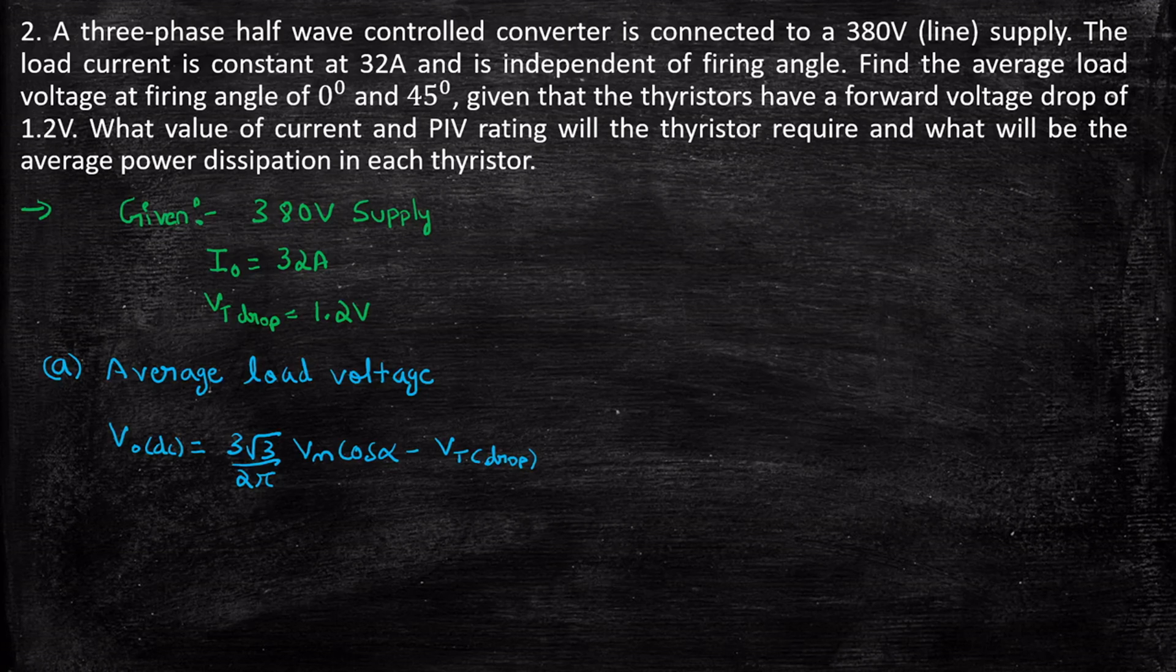Which is given as Vout DC is equal to 3 root 3 by 2 pi Vm cos alpha minus Vt drop. Since they have given Vt drop, we have to consider that. Just like the way we did previously, you will be getting 255.4 volts. And when alpha is equal to 45 degrees, here we are getting Vout DC. So this is the first portion of the requirement.